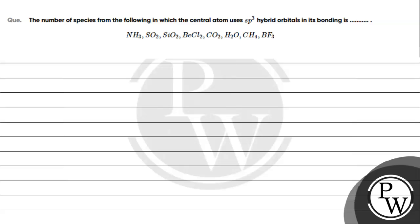Let's read this question. The question asks for the number of species from the following in which the central atom uses sp3 hybridized orbitals in its bonding. Let us identify which species are sp3 hybridized.